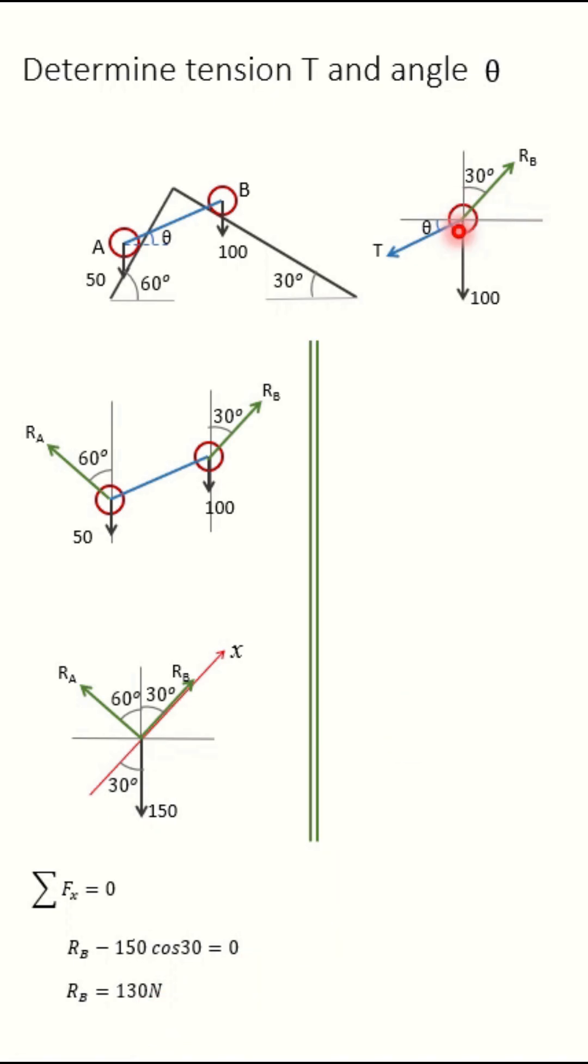Now in this free body diagram apply Sigma Fx is equal to 0 and Sigma Fy is equal to 0. So Sigma Fx is equal to 0, RB sin 30, RB sin 30 is equal to T cos theta. So T cos theta is equal to 65.